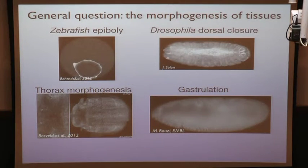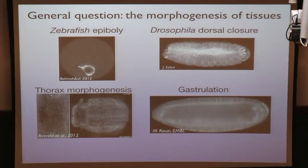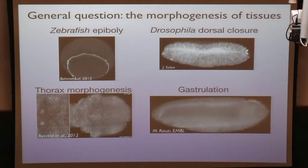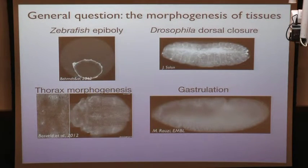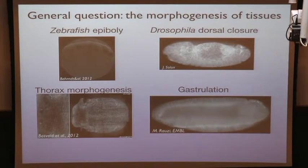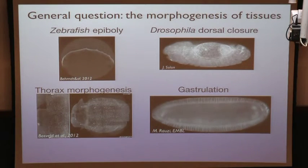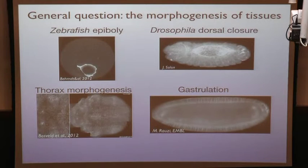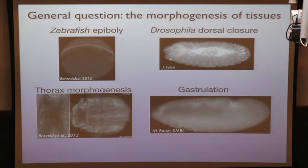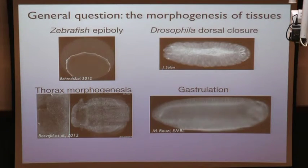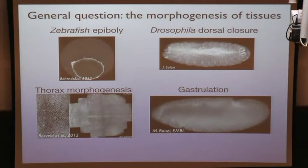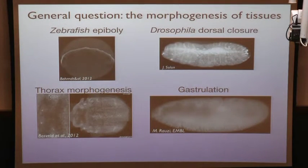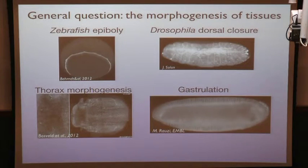All these processes occur on the timescale of several hours. They involve thousands of cells and they must occur in a coordinated way in order to establish the correct shape of the organism at the end of development. It is really essential to understand how cells manage to exert forces in a way that generates the correct flow and obtains the correct shape over the course of embryogenesis.